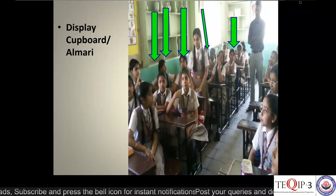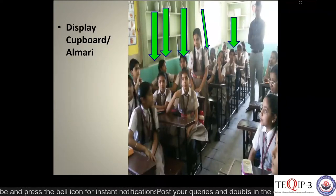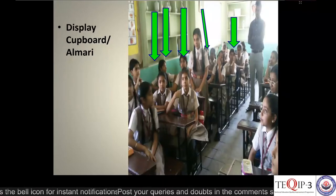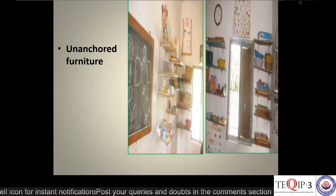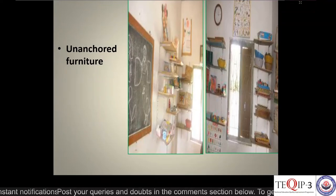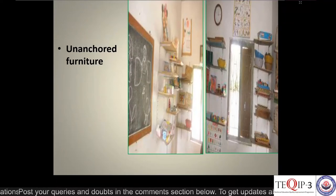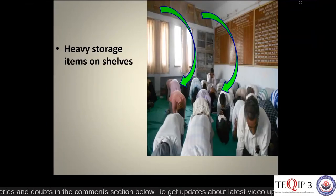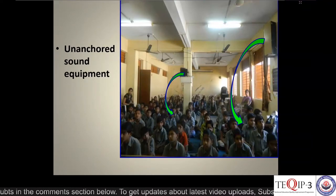Here is an example of a classroom with a display board where cutleries and other items are placed — in an earthquake the first items to fall will not be the building but these movable items, causing injuries to young children. Unanchored furniture — items not tied up — may start falling; if there is glassware or metallic items, it might block your escape route. Avoid placing heavy storage items on shelves, and take care of unanchored sound equipment as well.